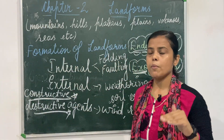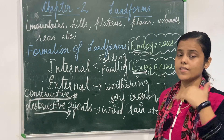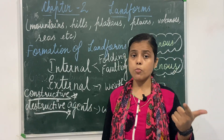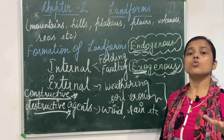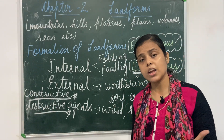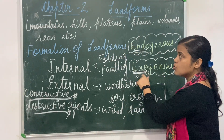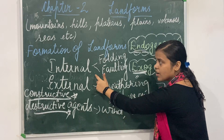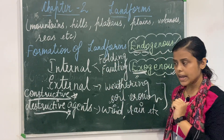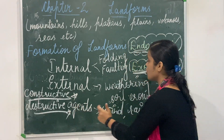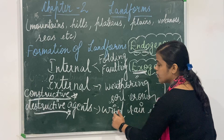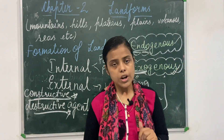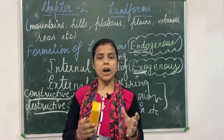This was all about the introduction of this chapter for today. What is landform? What is the term used for the study of landforms — that is geomorphology. Formation of landforms can be due to weathering, soil erosion, movement of tectonic plates, folding, and faulting. It is categorized under two headings: endogenous and exogenous. Endogenous is internal or constructive, due to folding and faulting; exogenous is destructive, due to weathering and soil erosion from agents of denudation. Hope you have a nice day. Thank you.